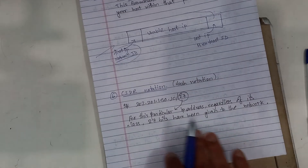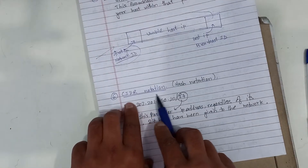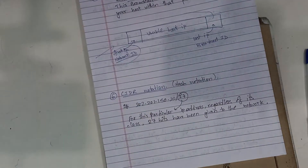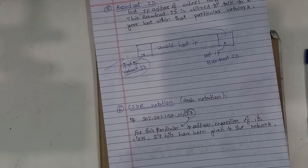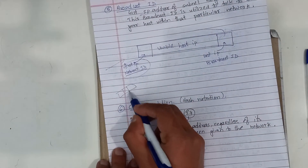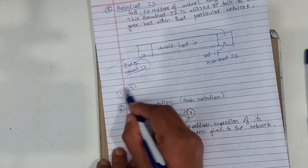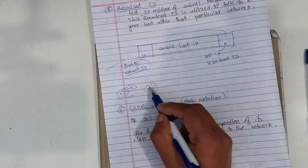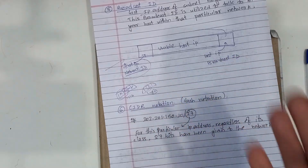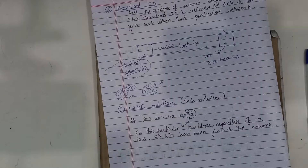The next topic is CIDR notation, which stands for Classless Inter-Domain Routing notation. For Class A, the default network bits are 8, so the CIDR notation is /8. For Class B, the first 2 octets are used, so the network bits are 16, giving /16. For Class C, 3 octets are used, giving 24 network bits, or /24.